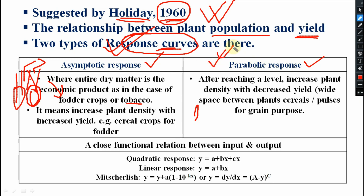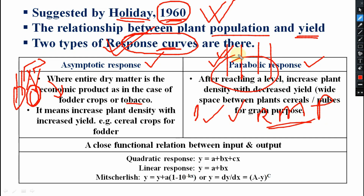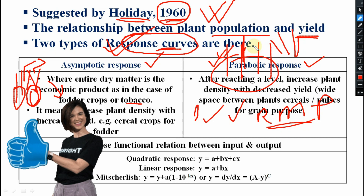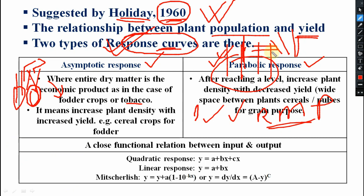So what is the parabolic response? After reaching a level, an increase in plant density will decrease yield. For example, in cereals, pulses, rice, or maize — if more density is present in a particular unit area, after a certain time period the yield will be reduced. It may be due to pest attack, overcrowding, or nutritional competition. But the yield will decrease when plant density increases — that is the parabolic response curve.